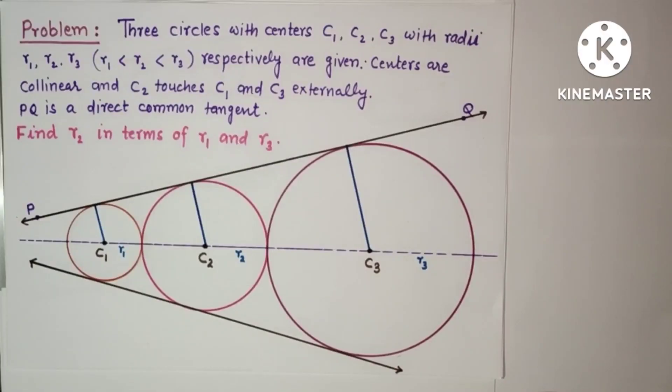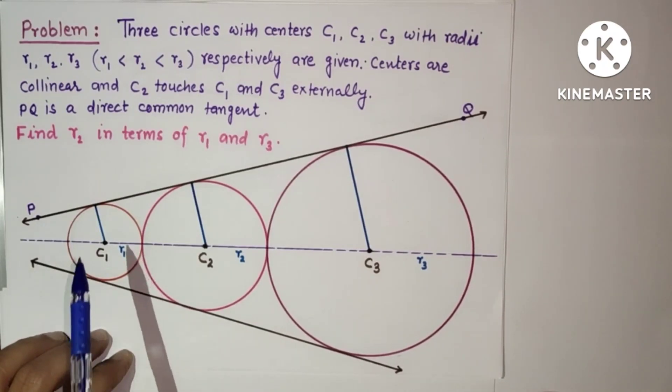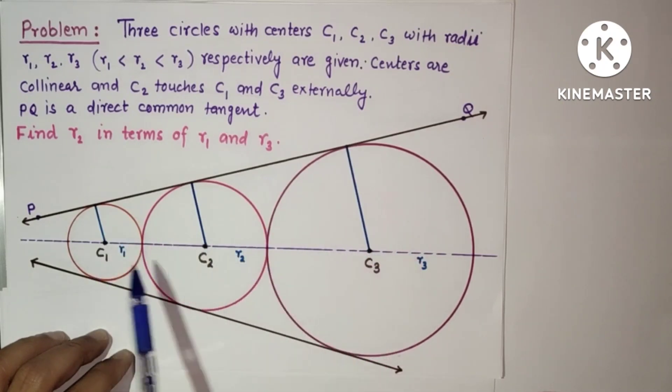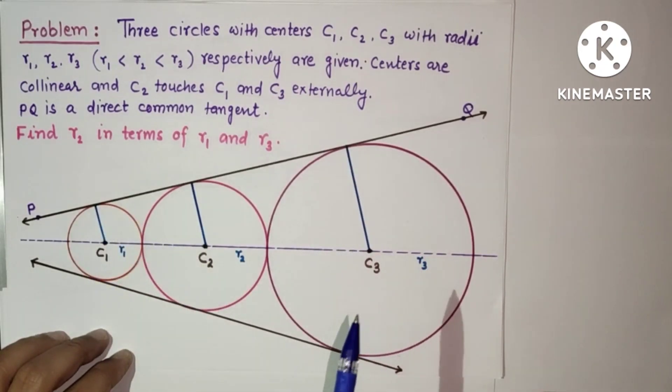Hi everyone, you are all welcome to my YouTube channel. In this problem we are given three circles with centers C1, C2, C3 with their radii R1, R2, and R3 given, and these centers are collinear, meaning they lie in a straight line.